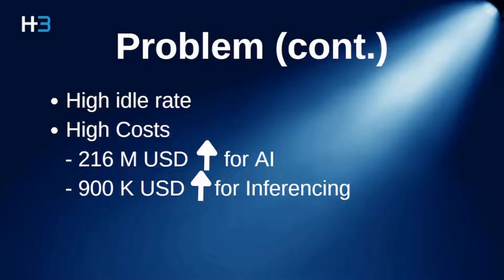As for inference racks, the GPU model they use for inferencing is cheaper, around $500. So 1800 servers will cost the company about $900,000 for installing these GPUs.